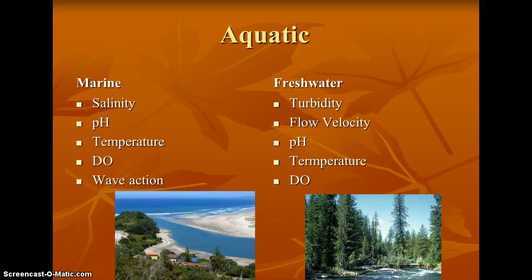In a marine ecosystem, the abiotic factors that we might measure are salinity — which is the amount of salt — the pH, the temperature, dissolved oxygen, and wave action. In freshwater, we look at turbidity, which is the cloudiness of the water; the flow velocity, the speed at which it's moving; the pH; the temperature; and dissolved oxygen.